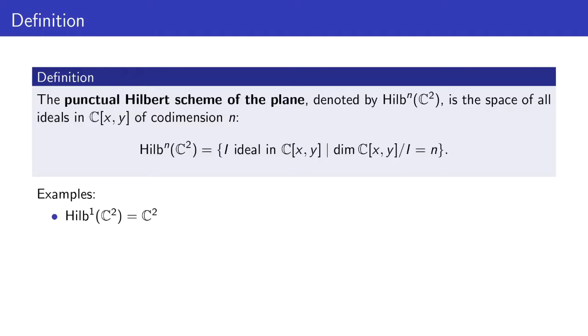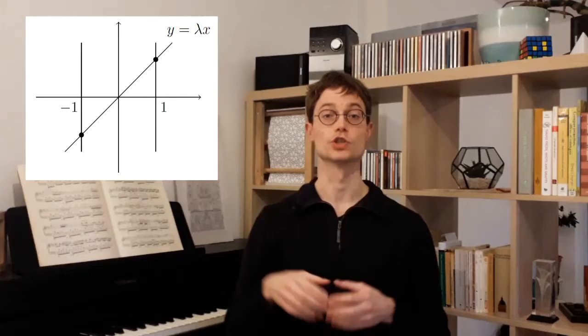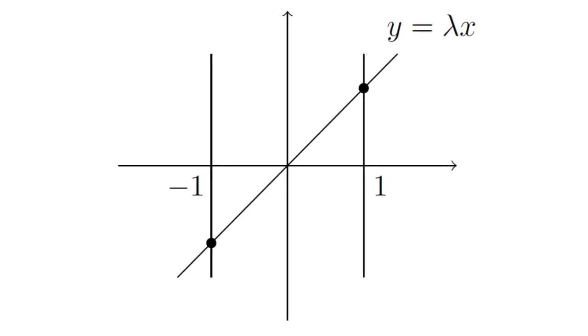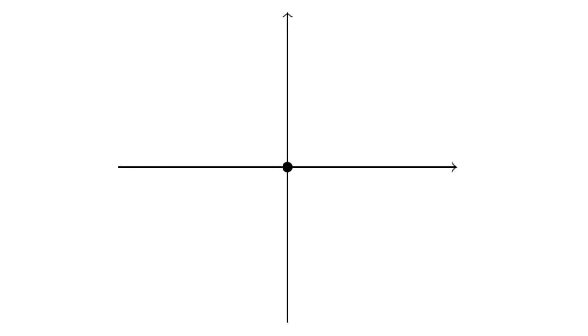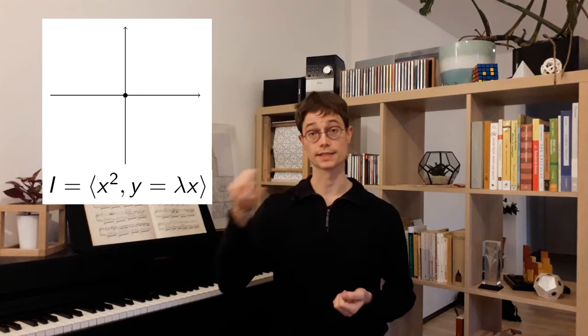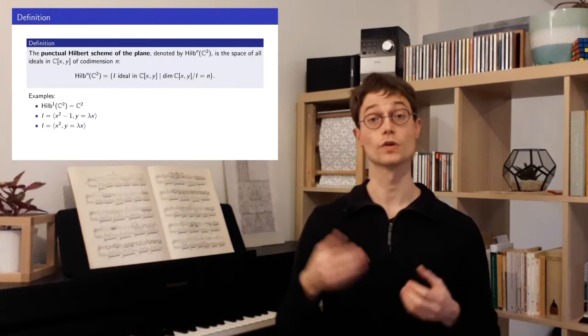Another example is given by the ideal generated by x² minus 1 and y equals λx, for some parameter λ. Geometrically, this corresponds to the intersection of a line of slope λ with two vertical lines, giving two distinct points. Now consider the ideal given by x² and y equals λx. This is the limiting case of the previous example, when the two vertical lines collide and give only the y-axis. Geometrically, we only see the origin, but in our ideal we still have the degree of freedom given by the parameter λ. This example lives in the two-point Hilbert scheme.